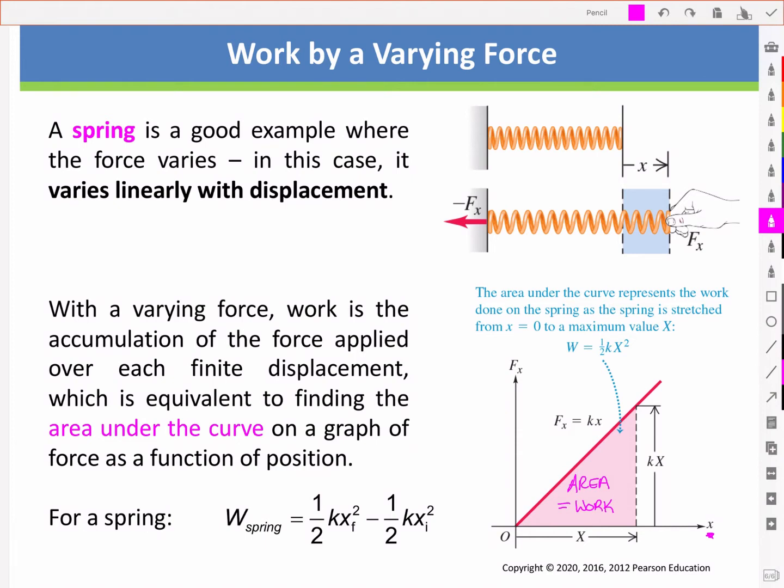That's equivalent to finding the area under the curve on a graph of the force as a function of position. And for a spring that is given by this expression here, one half kxf squared minus one half kxi squared, where this is the final and the initial position relative to a zero equilibrium position.